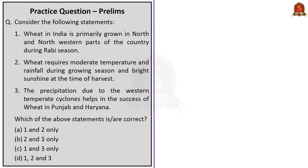The second question is a three-statement question. Statement one: wheat in India is primarily grown in north and northwestern parts of the country during rabi season—correct, eliminate option B. Statement two: wheat requires moderate temperature and rainfall during the growing season and bright sunshine at the time of harvest—correct, eliminate option C. Statement three: precipitation due to western temperate cyclones helps in the success of wheat in Punjab and Haryana—also correct. So the correct answer is option D: one, two and three.